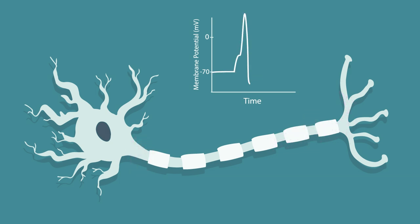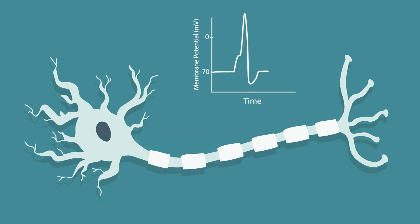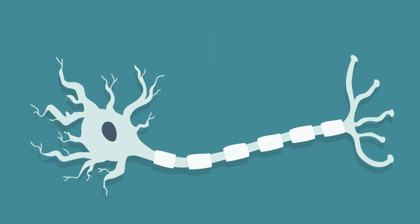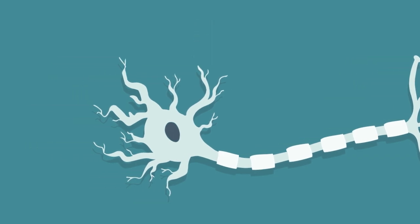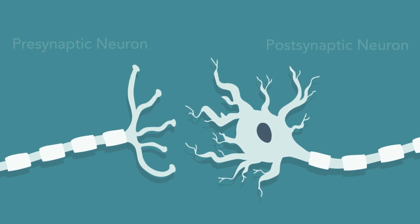As you can see, action potentials are all-or-none responses that happen very quickly. They are mere blips of activity, and they are always the same amplitude, and always excitatory. Although action potentials are the electrical language neurons use to communicate, they are not the signals EEG actually measures.